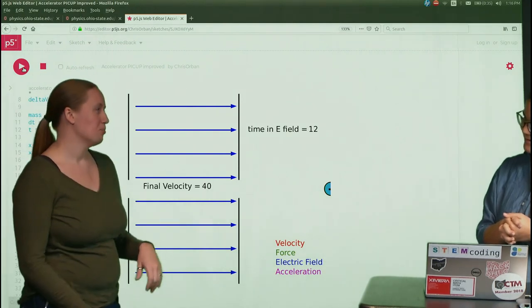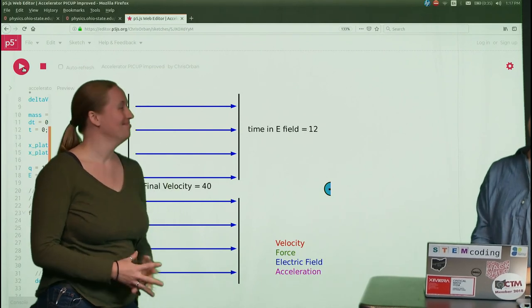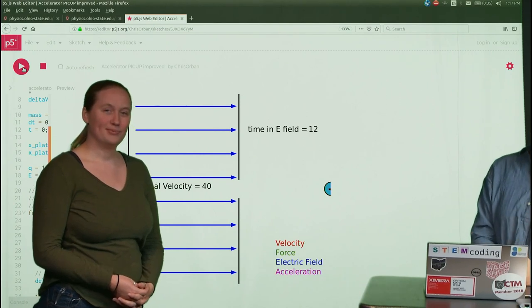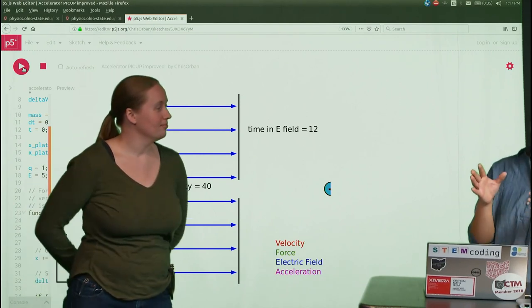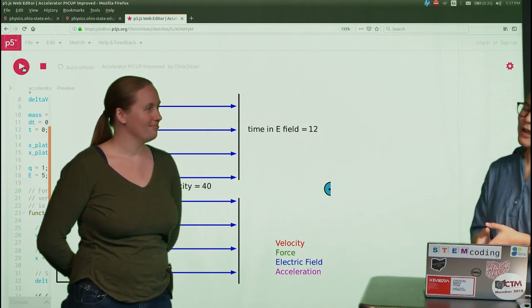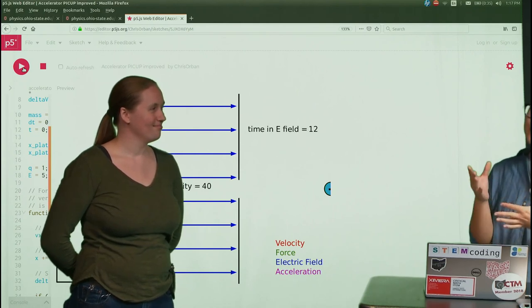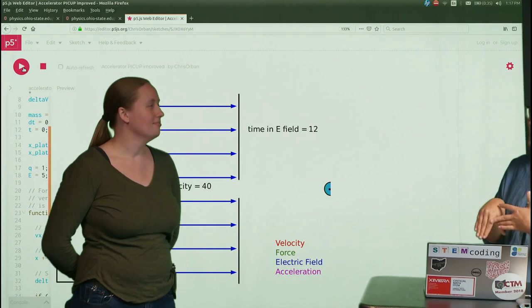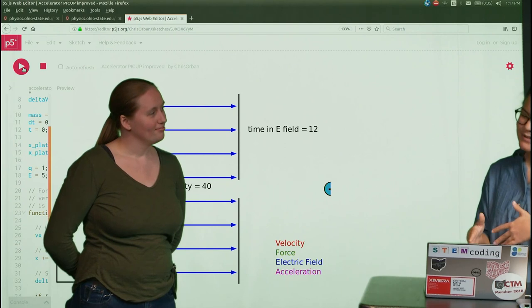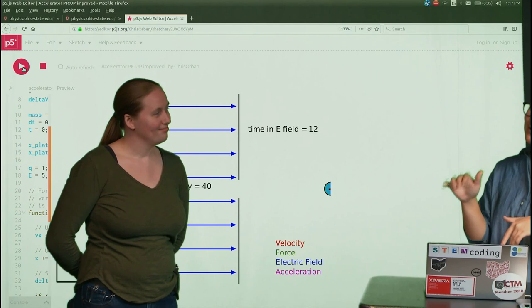Why would we expect a heavier particle to end up moving more slowly? Yeah. So from both from our experience in pushing heavier things, or from what we can understand through Newton's second law, where force equals mass times acceleration. If we have the same force, so that we have the same Q times E value, but we've increased our mass, that means our acceleration has to decrease. And so since we have a smaller acceleration through that same distance, that velocity is going to increase less than it did before.